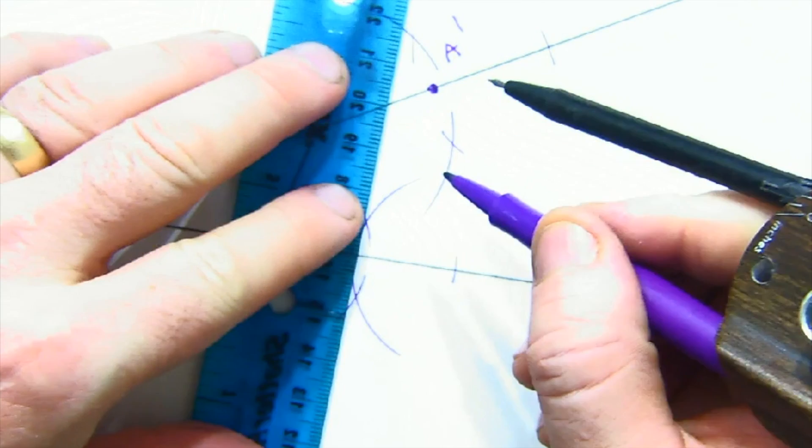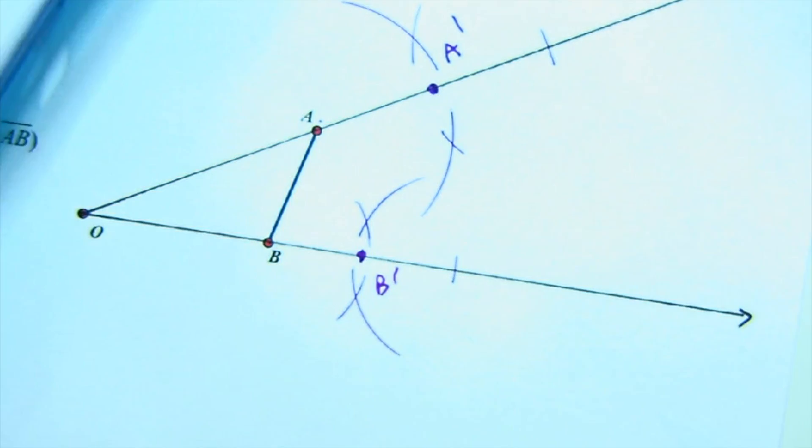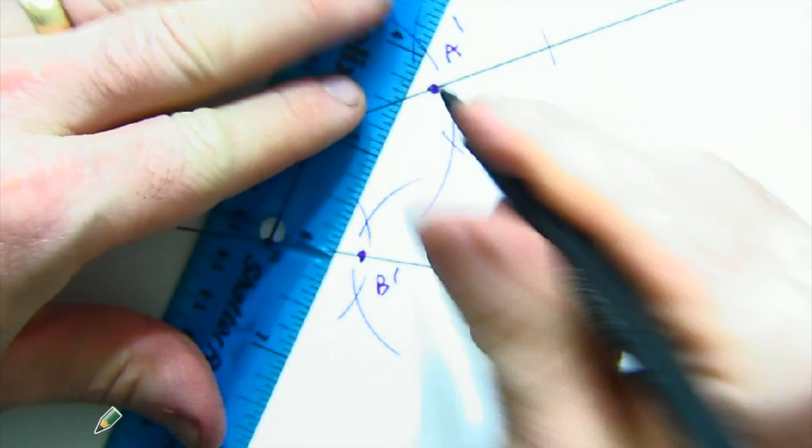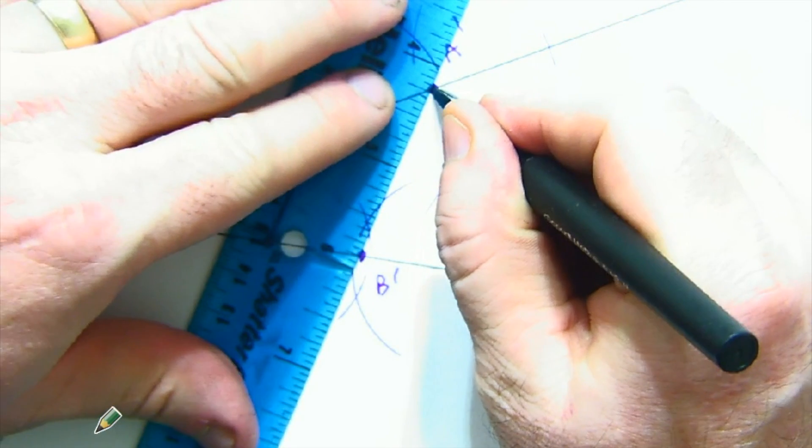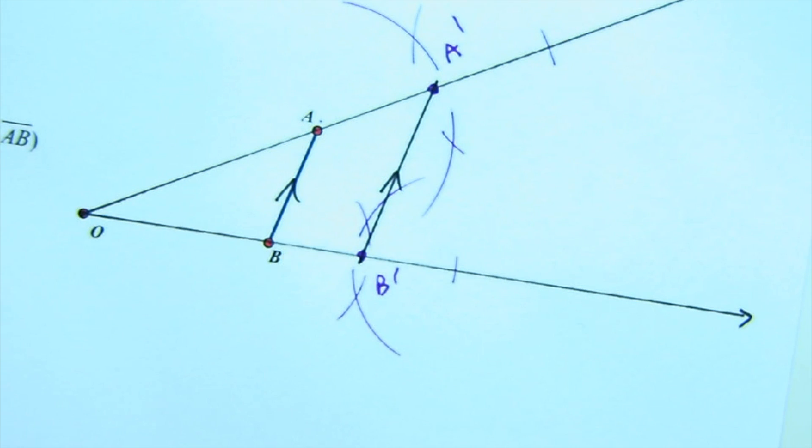And so I lay that down and make my mark. There's B prime. And again, then all I would do is connect my two dots, my two vertices A, A prime. Again, beautiful parallel lines. This is how we construct a dilation.